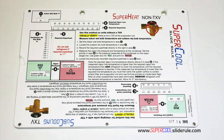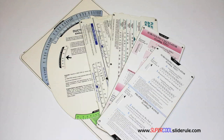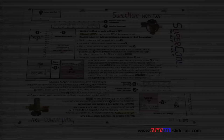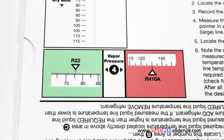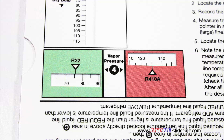I'd like to take a minute to introduce you to the coolest tool in the HVAC industry. Historically, technicians have carried 4 or 5 different slide rules — one for R22, one for R410A, one for metal duct sizing, one for flexible duct sizing, and yet others for diagnostics or troubleshooting. Thankfully, those days are gone. This one tool will allow you to charge a system with R22 or R410A in either the superheat or subcooling method.